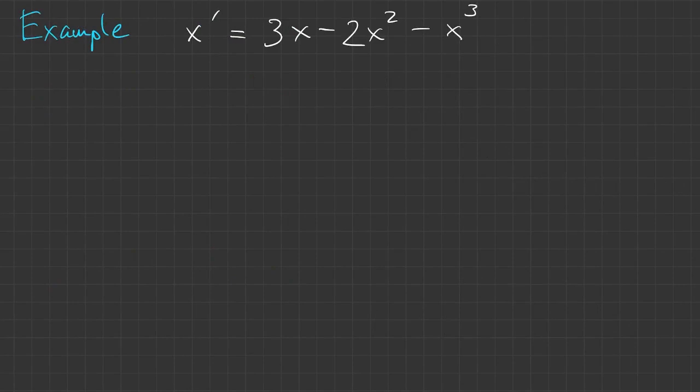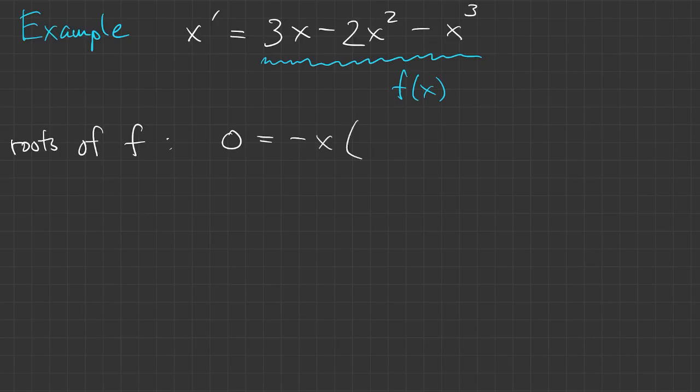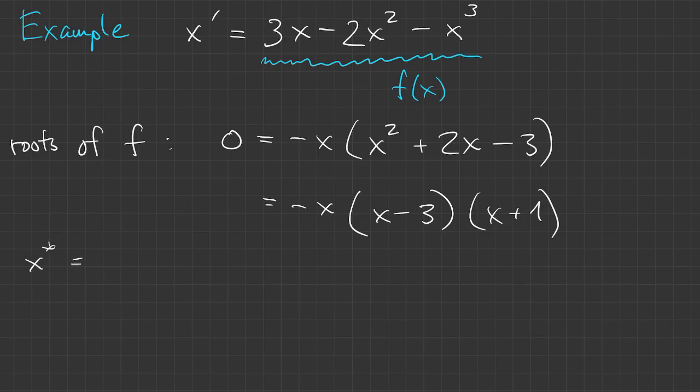Here's an example of an autonomous equation. This function here is what we call f(x). So we're trying to find where x prime equals zero. That means we're finding the roots of f, and f is pretty straightforward to factor. So we have equilibria at negative one, zero, and three.